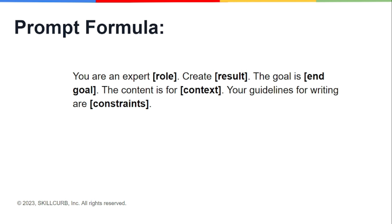Just like every other prompt, this also has a formula. You type: 'You are an expert in [role],' then 'Create a [result],' then 'My goal is [goal],' then 'The context is [context],' and at the end you also tell ChatGPT the limitations or constraints — the things you want ChatGPT to be careful about.